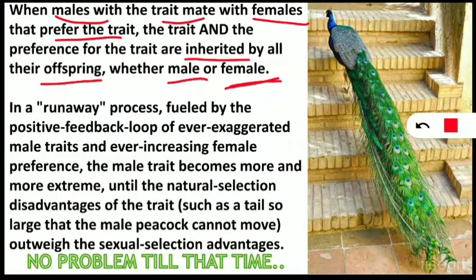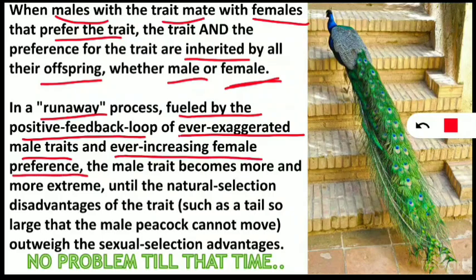The runaway process is fueled by a positive feedback loop of ever-exaggerated male traits and ever-increasing female preference. As this attraction and display increase through evolutionary time, it creates a positive feedback — every time a female is attracted toward a male trait, the progeny grows and the loop reinforces itself.